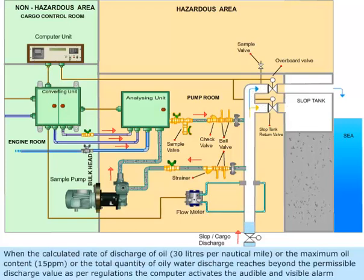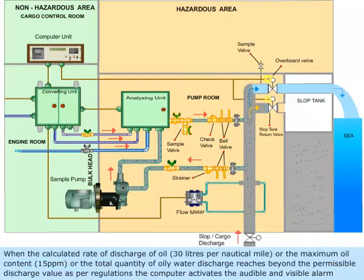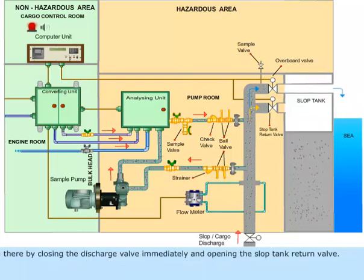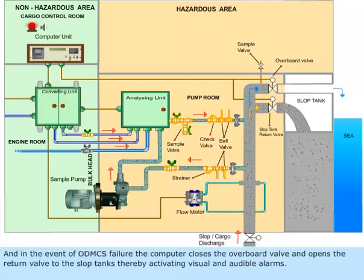When the calculated rate of discharge of oil exceeds 30 liters per nautical mile, or maximum oil content of 15 ppm, or the total quantity of oily water discharge reaches beyond the permissible discharge value as per regulations, the computer activates the audible and visible alarm, thereby closing the discharge valve immediately and opening the slop tank return valve. The cargo or slop pump should then be stopped. In the event of ODMCS failure, the computer closes the overboard valve and opens the return valve to the slop tanks, activating visual and audible alarms.